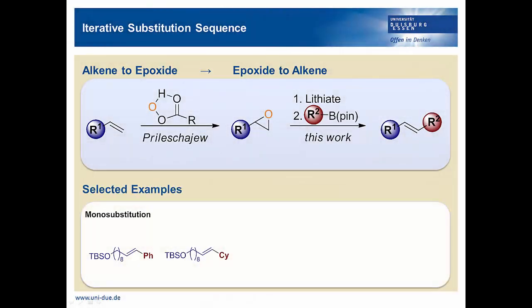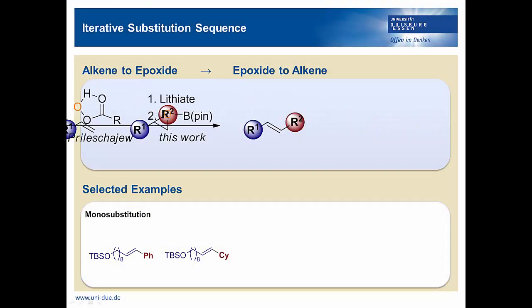However, this reaction works well with both sp2 and sp3-substituted boronates. And the nice thing is that the overall process can be applied iteratively, by converting the disubstituted alkene into a trans epoxide again.